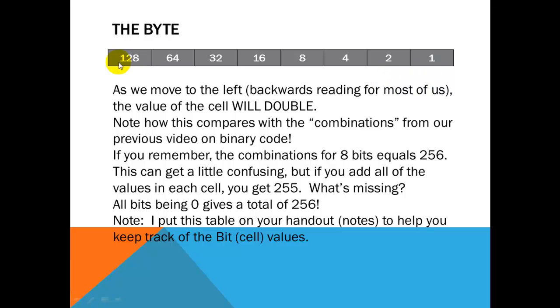So, this slot right here, the far left slot, if that is on, it counts as 128. The next one, if it were on, counts as 64. And so on, right down the list. Now, if you total these numbers all up, if you add 128, 64, 32, 16, 8, 4, 2, and 1, you will come up with 255. But we told you that 8 bits will equal 256. So, we're missing something. And what we're missing is that if they're all off, that's going to give you that extra 1. So, this is a little confusing sometimes, but there are 256 different combinations in this chart. And again, this chart's been put in your notes to help you keep track of the bit or the cell values.